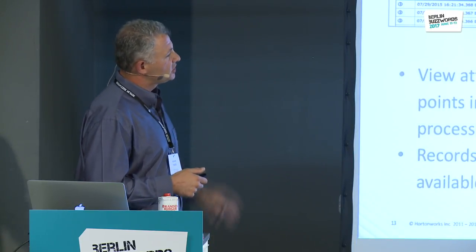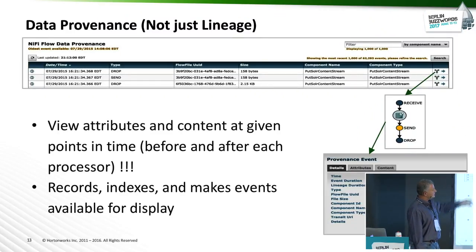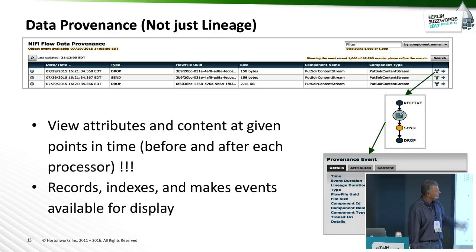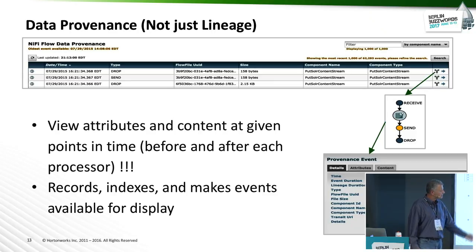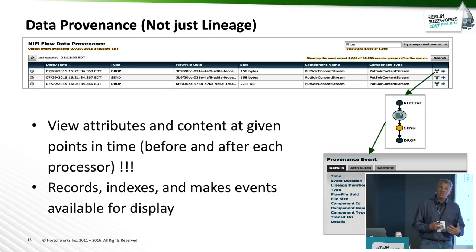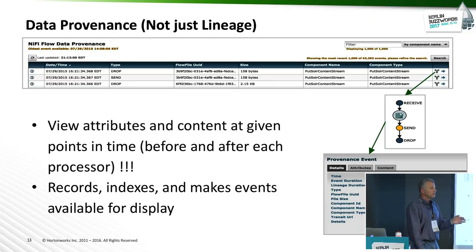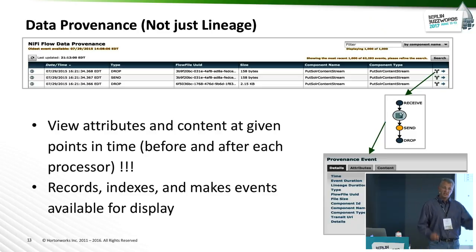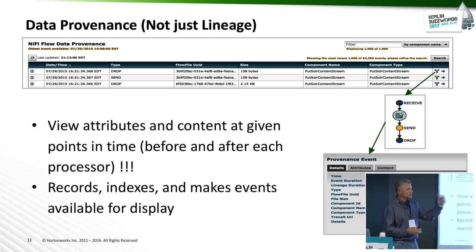This shows an example of provenance beyond just lineage. You can look at this lineage tree — it was received, there was a send event, a drop event. You see details about the provenance event: how long it was in lineage, the UUID for the flow file, the size, the attributes, the content. All this information you can also get out of NiFi and send to another system for auditing — people send it to Solr, build dashboards on it, or load it into HBase to run audits.